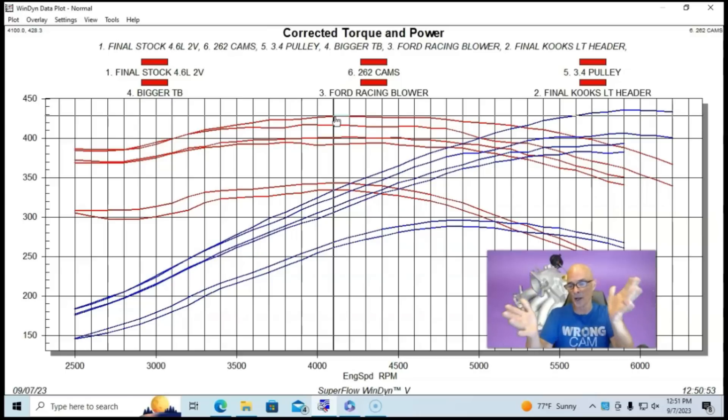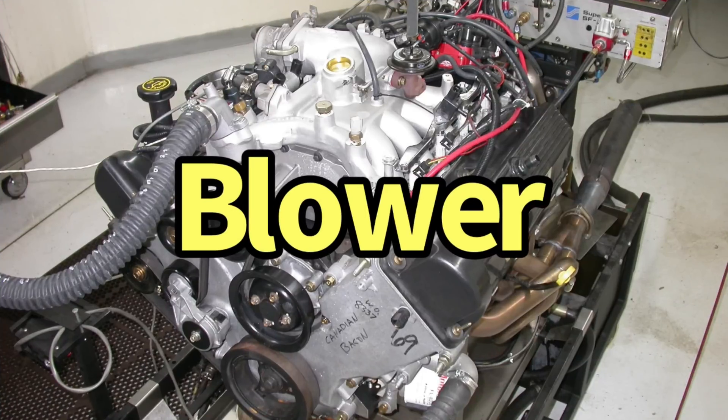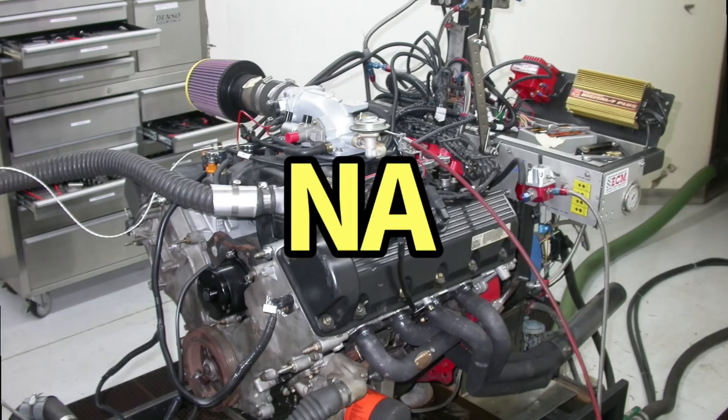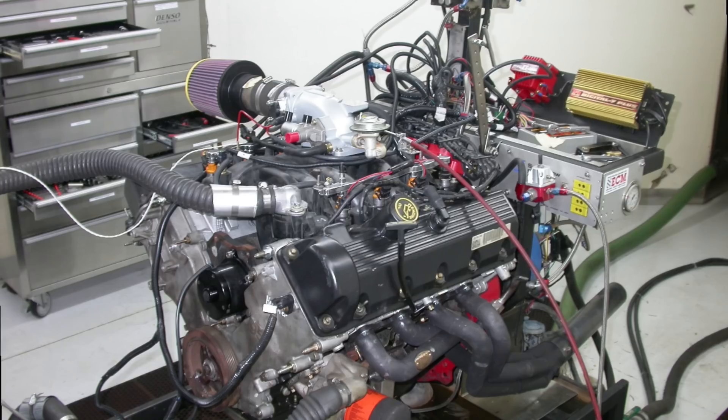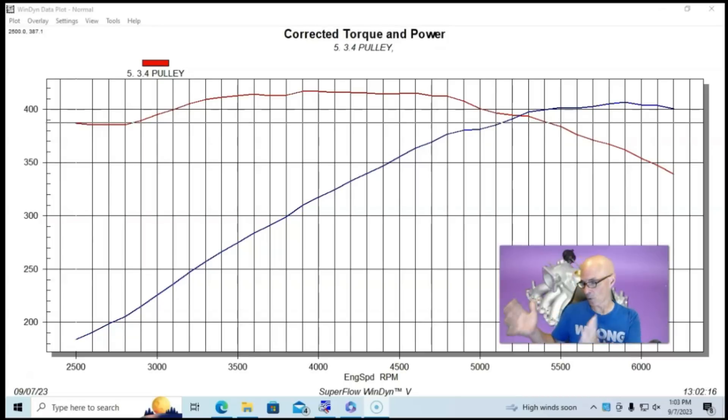But now let's compare our two 400 horsepower combinations. And then we'll look at another one thrown in for good measure. Okay guys, now let's take a look and see which one of these would you pick? Would you pick the 400 horsepower NA combination? Or would you pick the 400 horsepower supercharged combination? And the best way for you to choose is for me to overlay the two graphs. And you could see where they made the same amount of peak power. But that doesn't mean the curves were the same.